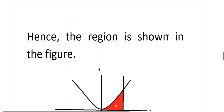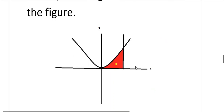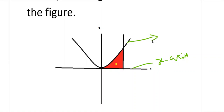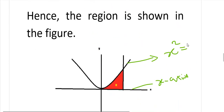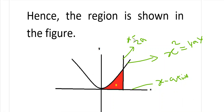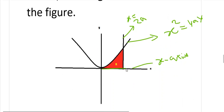Now we will observe the region bounded by the three curves. The first curve is the x-axis, the second is the parabola x squared equals 4ay, and the third is the line x equals 2a. Observing the three curves — the x-axis, the line x equals 2a parallel to the y-axis, and the parabola — the enclosed region is our required region R.